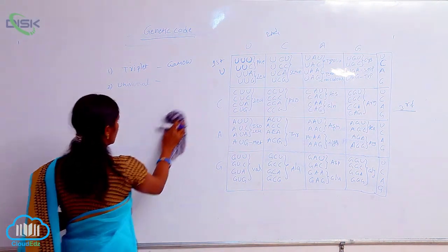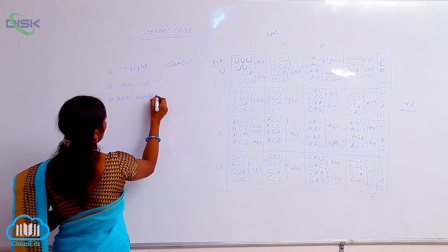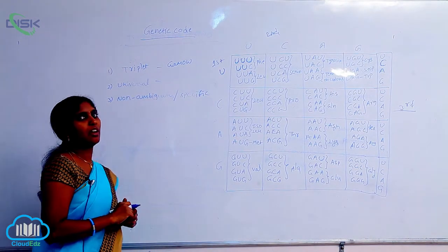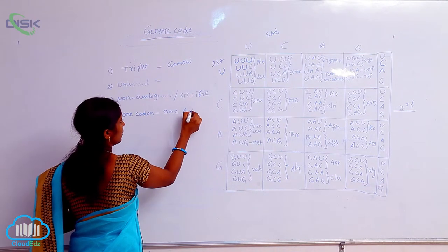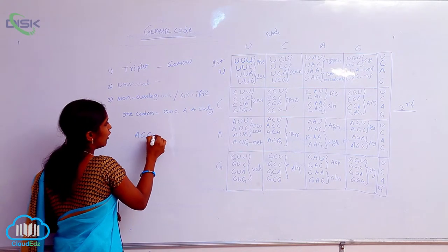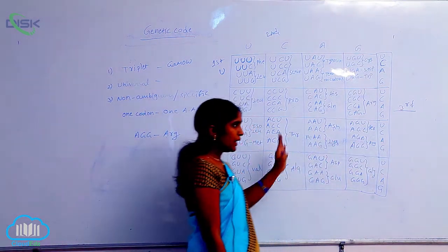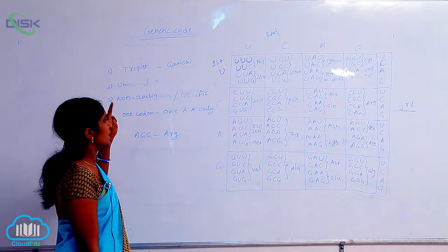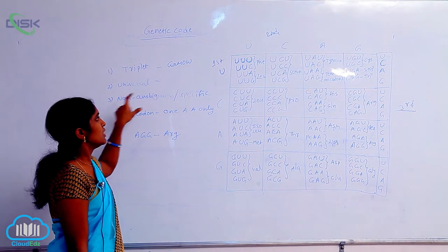The next property is non-ambiguous, or unambiguous. One codon always codes one amino acid only. For example, AGG always codes arginine only — it does not code any other amino acid. That property is called non-ambiguous, meaning one specific codon always codes for one specific amino acid only.